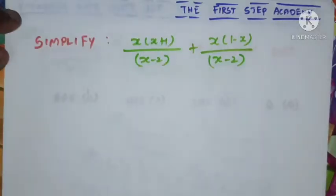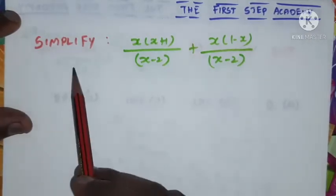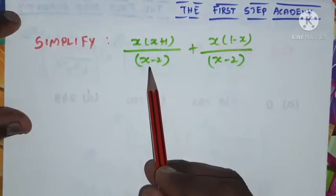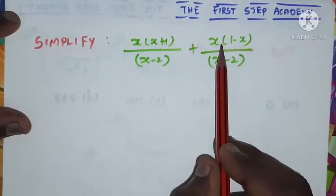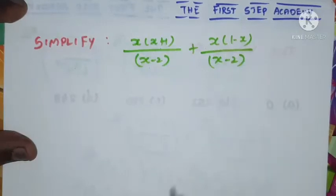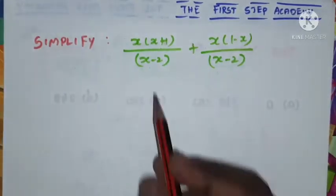Okay, the given problem is simplify x into x plus 1 divided by x minus 2 plus x into 1 minus x divided by x minus 2. This is one of the simple problems, so look at the problem, look at the denominator of these two terms.